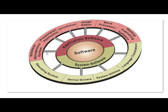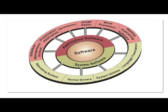An application program is a software program that runs on your computer. The word application is used because each program has a specific purpose. For example, a word processor can help a student create a project, while a video game can prevent the student from getting the project done.